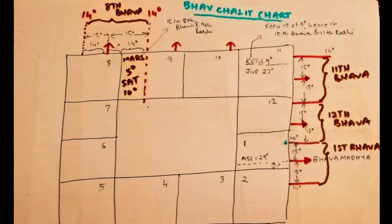Now look at another example. In this diagram, Mars is at 5 degrees in the house labeled number 9, that is in the sign of Aries or Mish. We know that Aries is Mars' own house, and for this particular chart with Leo ascendant, Mars is in the 9th house in the Rashi chart. But Mars is at 5 degrees in the sign of Aries, and if you look at the Bhava chart, Mars lies in the 8th Bhava. The 8th Bhava starts at 14 degrees in the sign of Pisces and ends at 14 degrees in Aries. So Mars at 5 degrees in Aries is in the 8th Bhava but the 9th Rashi.